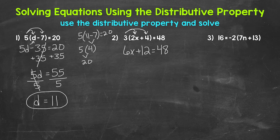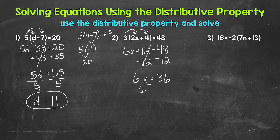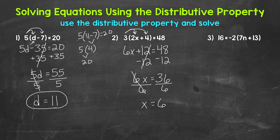Now let's undo that addition first. The inverse operation of addition is subtraction, so subtract 12 from both sides. The 12s on the left side cancel out, and we now have 6x equals 48 minus 12, which is 36. So 6x equals 36. We need to undo that multiplication — the inverse operation is division — so divide both sides by 6. The 6s on the left cancel out, and x is now isolated. 36 divided by 6 gives us 6, so x equals 6. That's our solution.